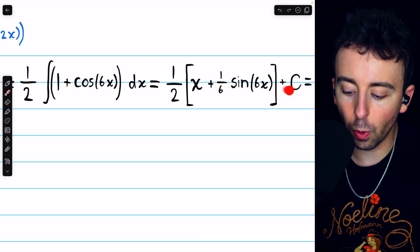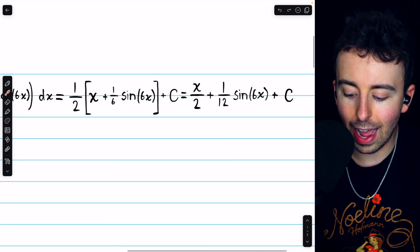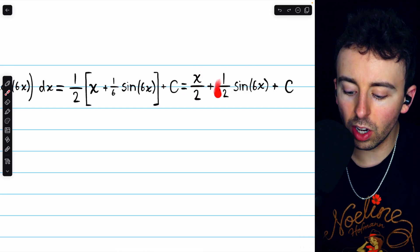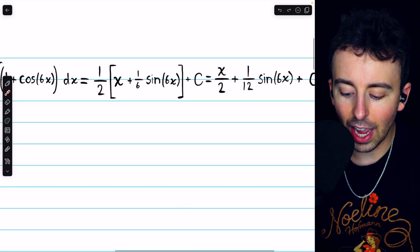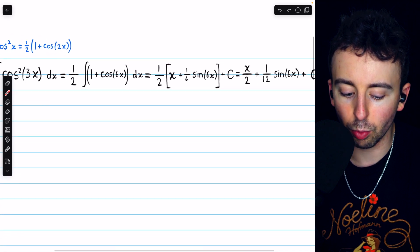So this is the correct integral with, of course, the arbitrary constant. Finally, we can just distribute the 1 half to get our final answer of x over 2 plus 1 twelfth sine of 6x plus c. And that is the integral of cosine squared of 3x.